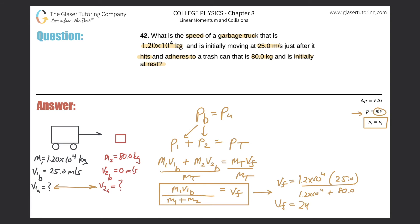And we get a value of about 24.8. Considering rounding, so 24.8 and that is meters per second. That will be the final velocity of the garbage truck. That's also the final velocity of the trash can and it's the final velocity of the entire system together because it's an inelastic collision and they stick.